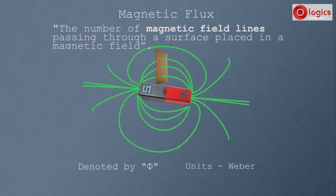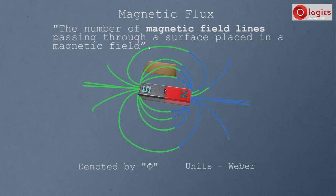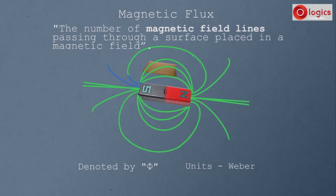Now rotate the cardboard and place it like this. Observe — the cardboard is still in the magnetic field, but the number of magnetic lines passing through its surface is zero. As no magnetic lines are passing, magnetic flux is also zero.